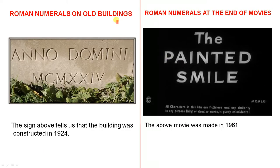Sometimes you'll see Roman numerals on very old buildings. For example, this one here: M, C, M, X, X, I, V.